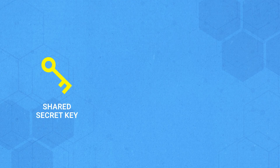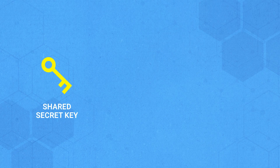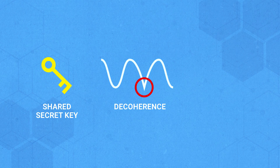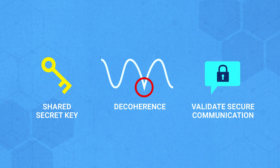Quantum key distribution is based on several important concepts. The first is a shared secret key, which parties can generate and is known only to the participants. Second, quantum signals are incredibly sensitive and prone to quantum decoherence, meaning any attempt to intercept or eavesdrop on quantum signals will cause disruptions that immediately alert participants to intrusion. And third, quantum key distribution can use the laws of quantum physics to validate or prove secure communication.